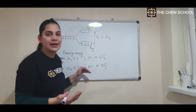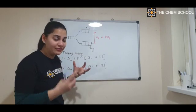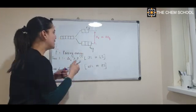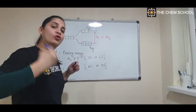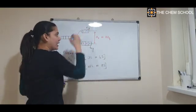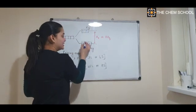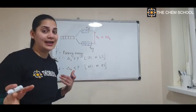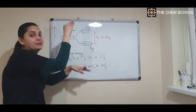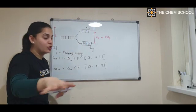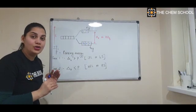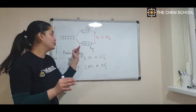For weak field (high spin) ligands, Case 2 applies. Because Δo is smaller than the pairing energy P, the 4th electron jumps up to EG rather than pairing in T2G, giving half-filled orbitals first. Pairing only begins from the 6th electron onwards. In all cases electrons are still filled following Hund's rule.